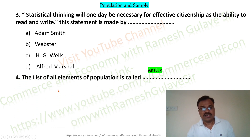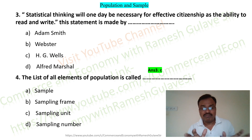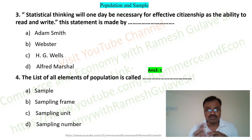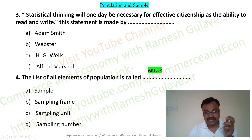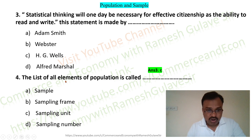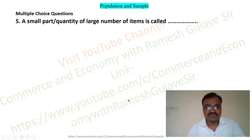The next question asks: the list of all elements of population is called dash. Population is the total number of observations under study. The list of all elements of population is called a sampling frame. The options are: sample, sampling frame, sampling unit, and sampling number. Option B, sampling frame, is the right answer.